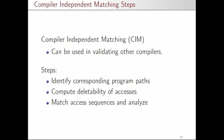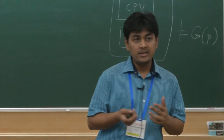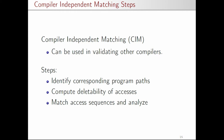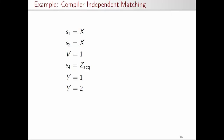For compiler-independent matching, the steps are: first, identify corresponding program path pairs for the source and target; then for each path pair find the access sequences — the shared memory accesses on each path; then compute the deleteability of accesses, which tells us whether removing a certain access in that sequence is correct; and finally match the access sequences from source and target and check whether the matching was done correctly.